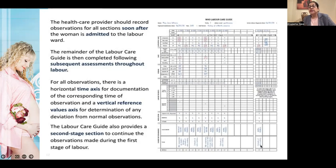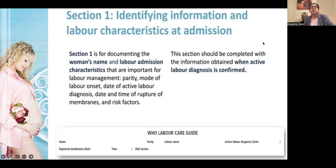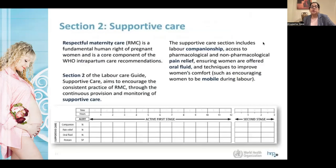The second stage section is particularly important, where all relevant findings are plotted during the second stage. Looking at section one — identifying information — this includes the name of the patient, parity, time of onset of labor, when she went into active labor, various risk factors, and time of rupture of membranes.